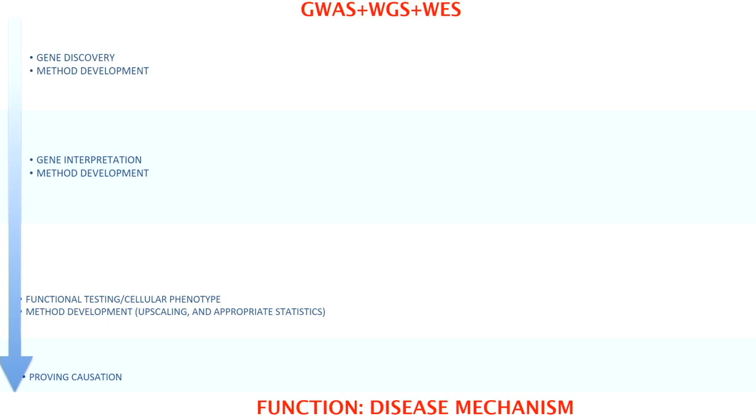At every stage we're also focusing on method development. My background is in statistical genetics, so I'm really interested in developing novel methods. It's an exciting time where large datasets are coming in from biology, bioinformatics, and psychiatric phenotypes. Combining all these data into meaningful datasets is a big challenge, and that's why part of our work focuses on developing novel methods to deal with these new data.